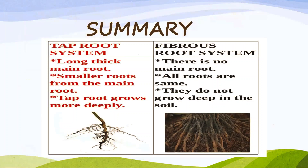In summary, we learned about the tap root system and fibrous root system. In the tap root system, there is a long thick main root with smaller roots branching from the main root, and it grows more deeply. In the fibrous root system, there is no main root — all roots are the same size and they do not grow deep into the soil.